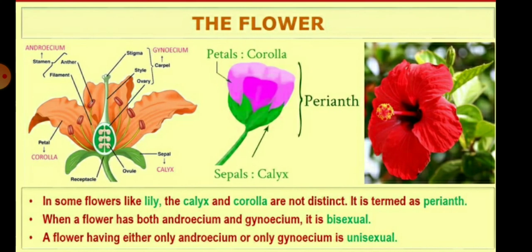In some flowers like the lily, the calyx and corolla are not distinct, and it is termed as the perianth. When a flower has both androecium and gynoecium, it is called a bisexual flower. But a flower having either only androecium or only gynoecium is called a unisexual flower.